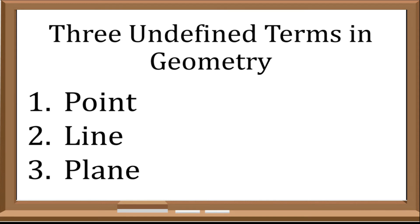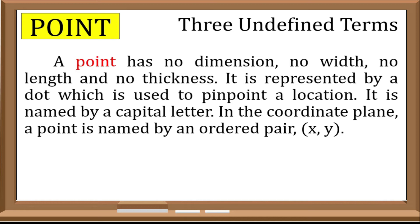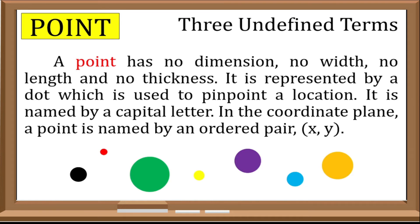Let us review these undefined terms. First is point. A point has no dimension, no width, no length, and no thickness. It is represented by a dot, which is used to pinpoint a location. It is named by a capital letter. In the coordinate plane, a point is named by an ordered pair (x, y). These are examples of the representation of a point.